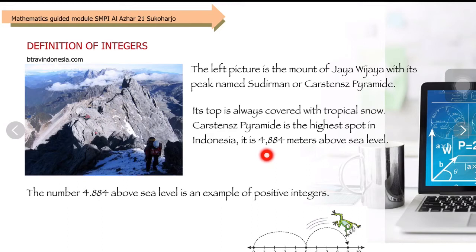Carstensz Pyramid is the highest point in Indonesia, it is 4,884 meters above sea level. The number 4,884 above sea level is an example of positive integers, one of the examples of integers, especially it's an example of positive integers.